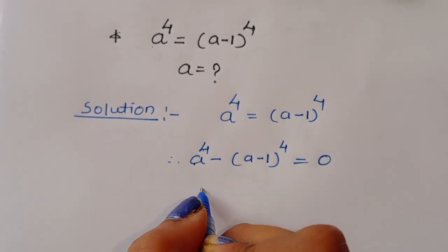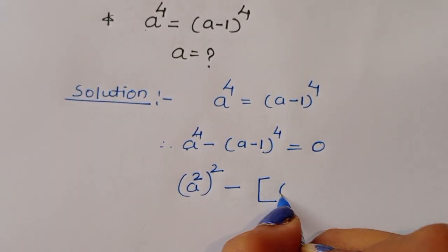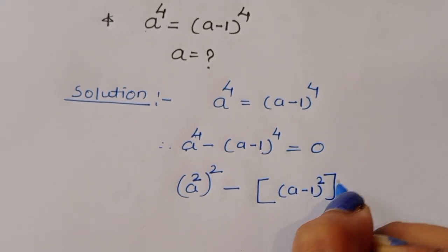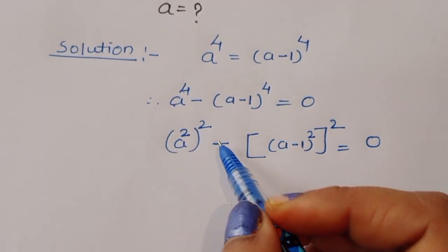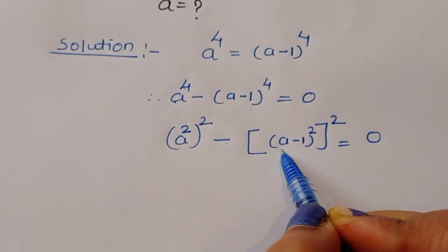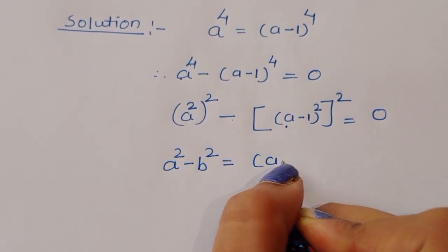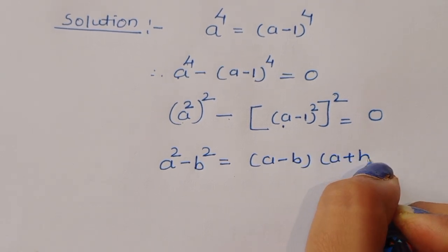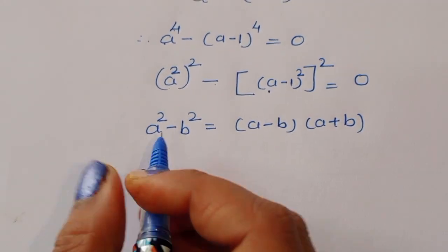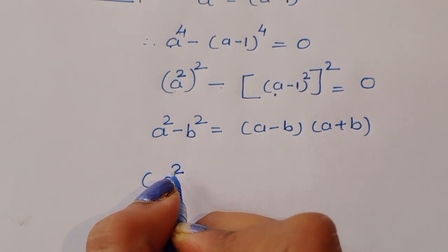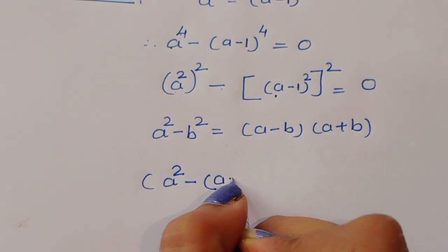Now a⁴ can be written as (a²)² and (a-1)⁴ as ((a-1)²)², so we have (a²)² minus ((a-1)²)² equal to 0. This is a difference of squares form, a² minus b², where a² here and (a-1)² is b. We know the formula a² minus b² equals (a minus b)(a plus b), so using this formula we write (a² minus (a-1)²) times (a² plus (a-1)²) equal to 0.